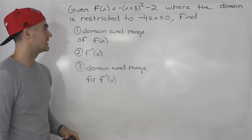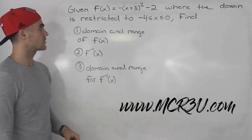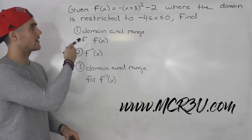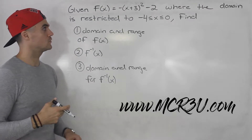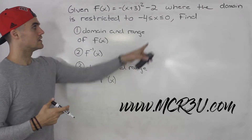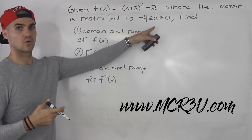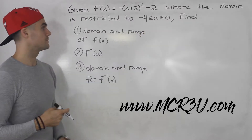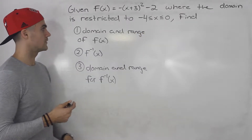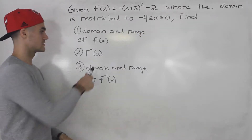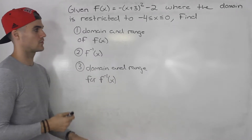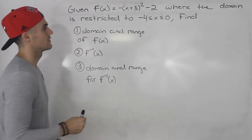What's up everybody, welcome back. In this question we're given f of x is negative bracket x plus 3 squared minus 2, where the domain is restricted to x being between negative 4 and 0. We have to find: number one, the domain and range of f of x; the inverse; and then the domain and range of the inverse.